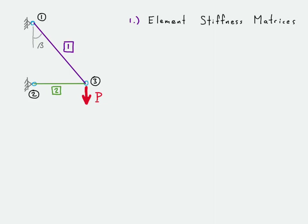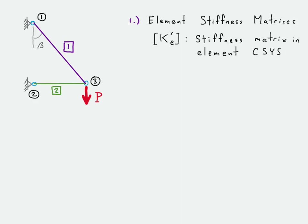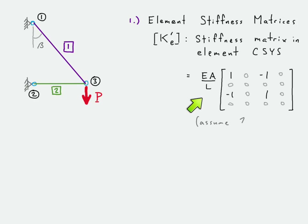Step one is the element stiffness matrices. We look at the stiffness matrix in the element coordinate system, composed of our axial stiffness EA over L — the Young's modulus multiplied by cross-sectional area divided by length. We assume two translation degrees of freedom at each node, giving us a four by four matrix. The ones in the matrix correspond to the axis of the element — the x direction — because a truss bar only has stiffness along its axis. The zeros correspond to the transverse direction where there is no stiffness.